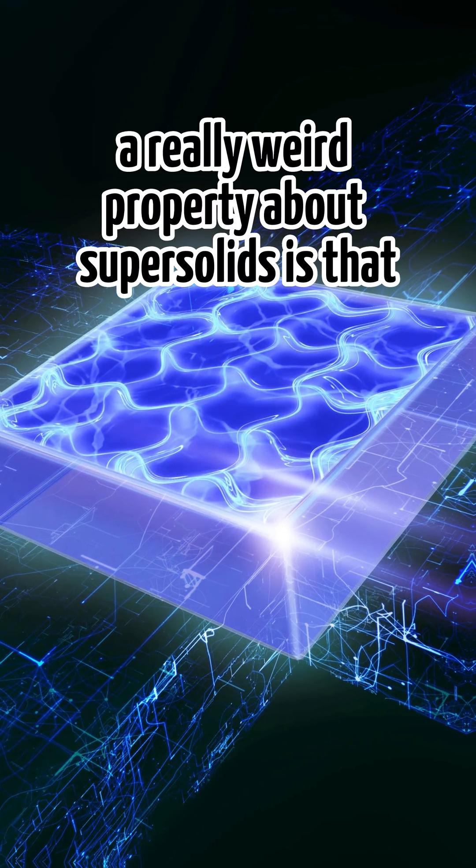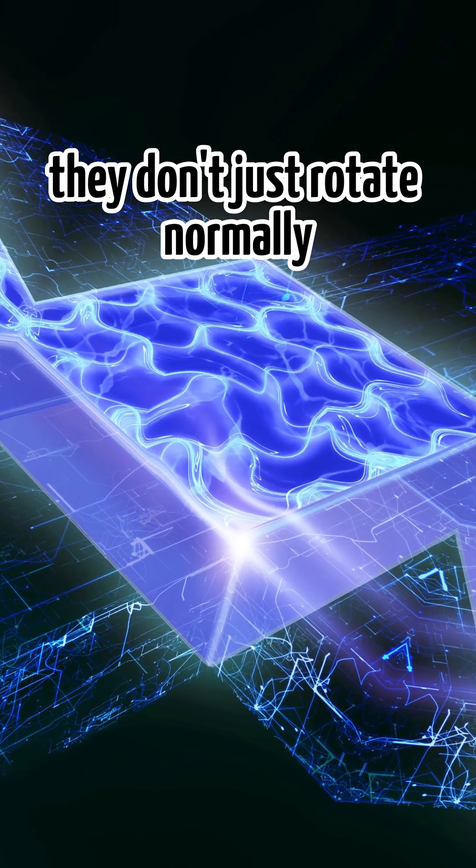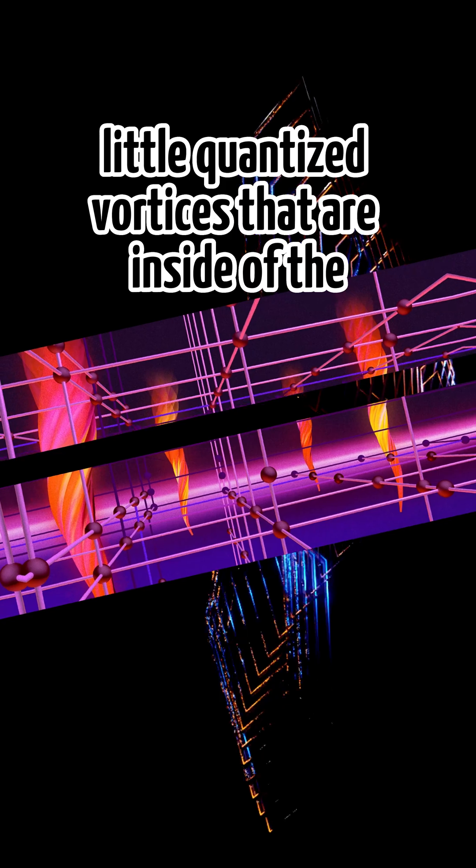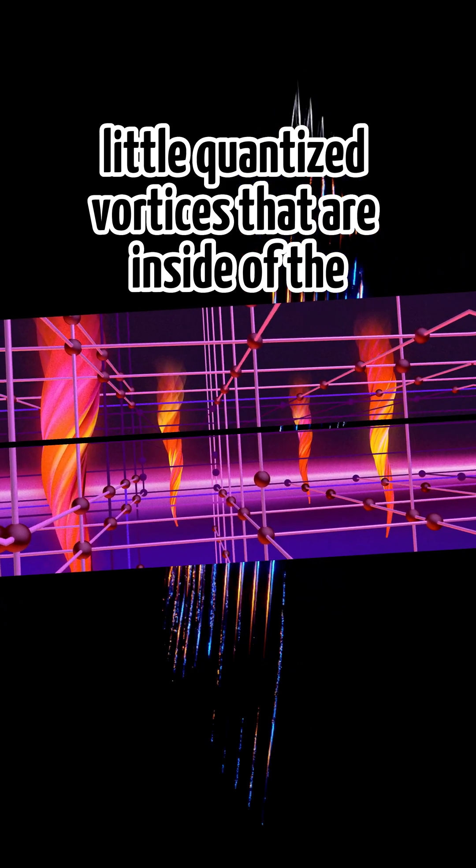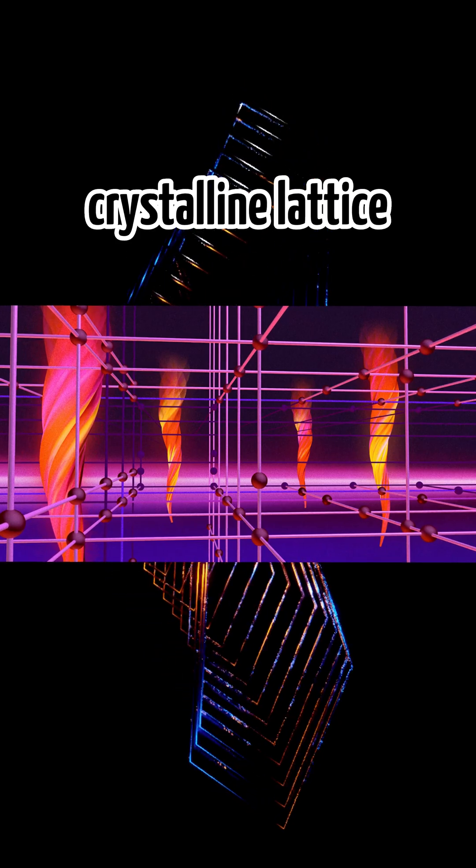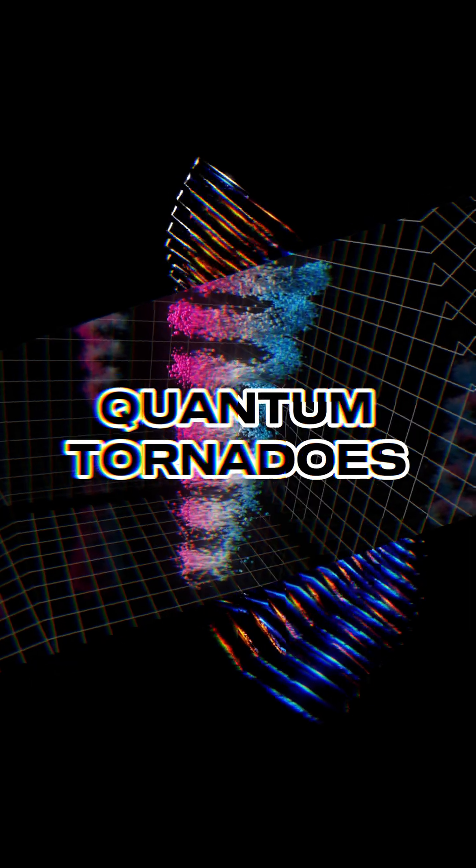A really weird property about supersolids is that if you spin them around really fast, they don't just rotate normally like a liquid or a solid. They create these weird little quantized vortices that are inside of the crystalline lattice, or as they're more commonly known, quantum tornadoes.